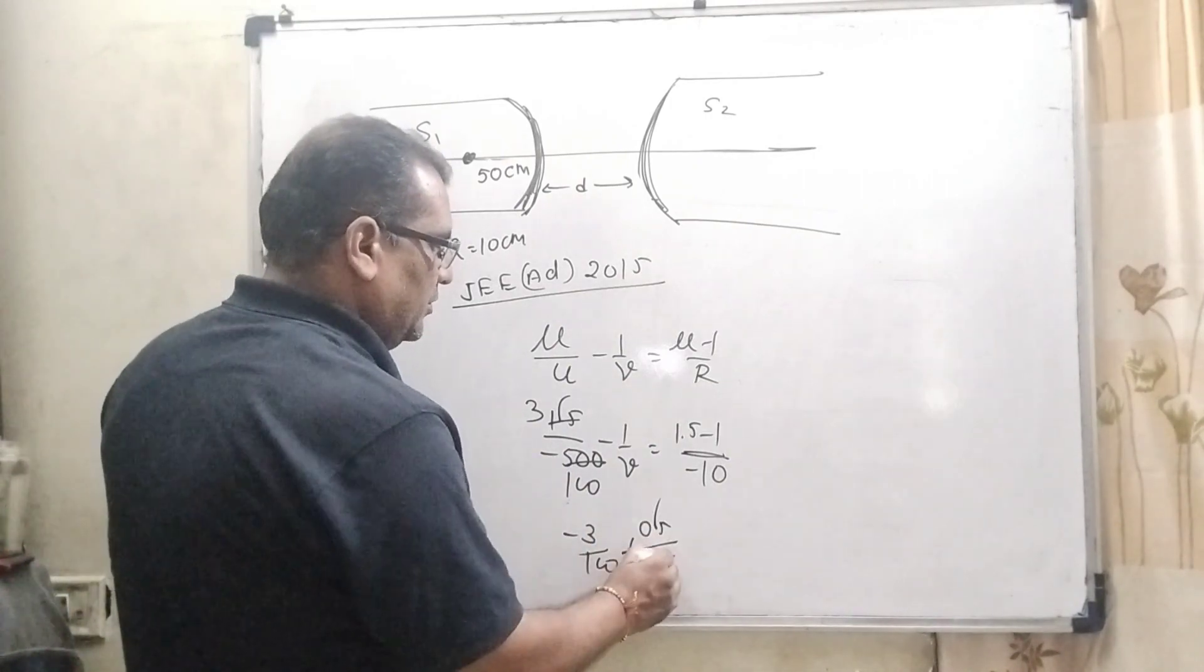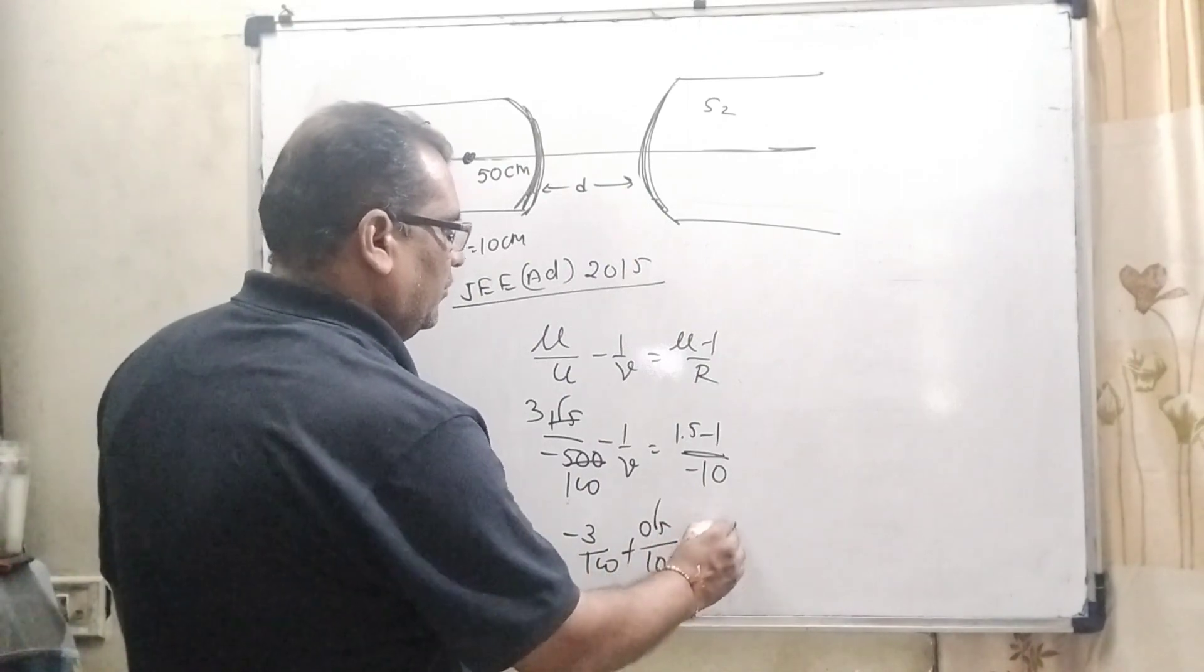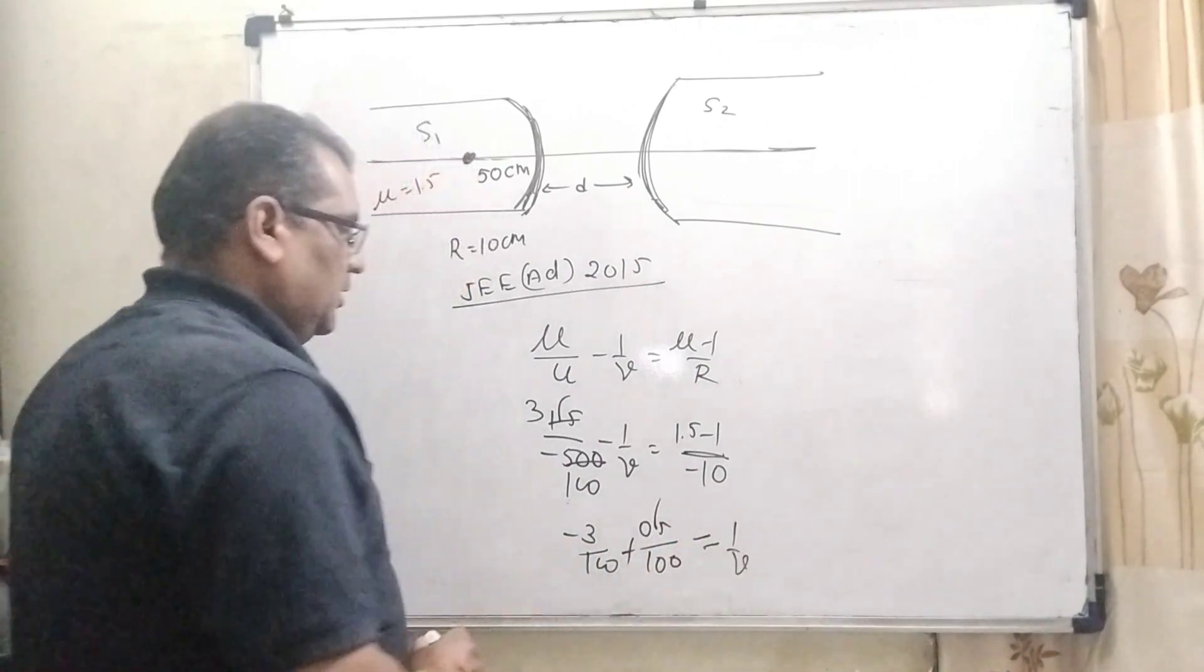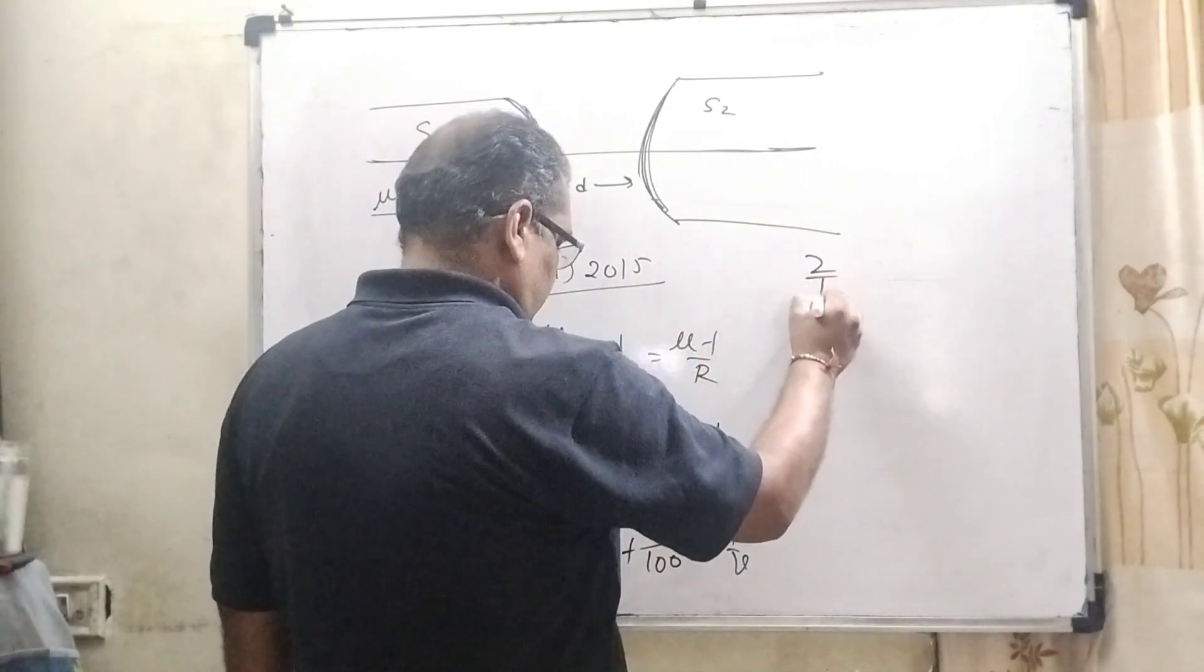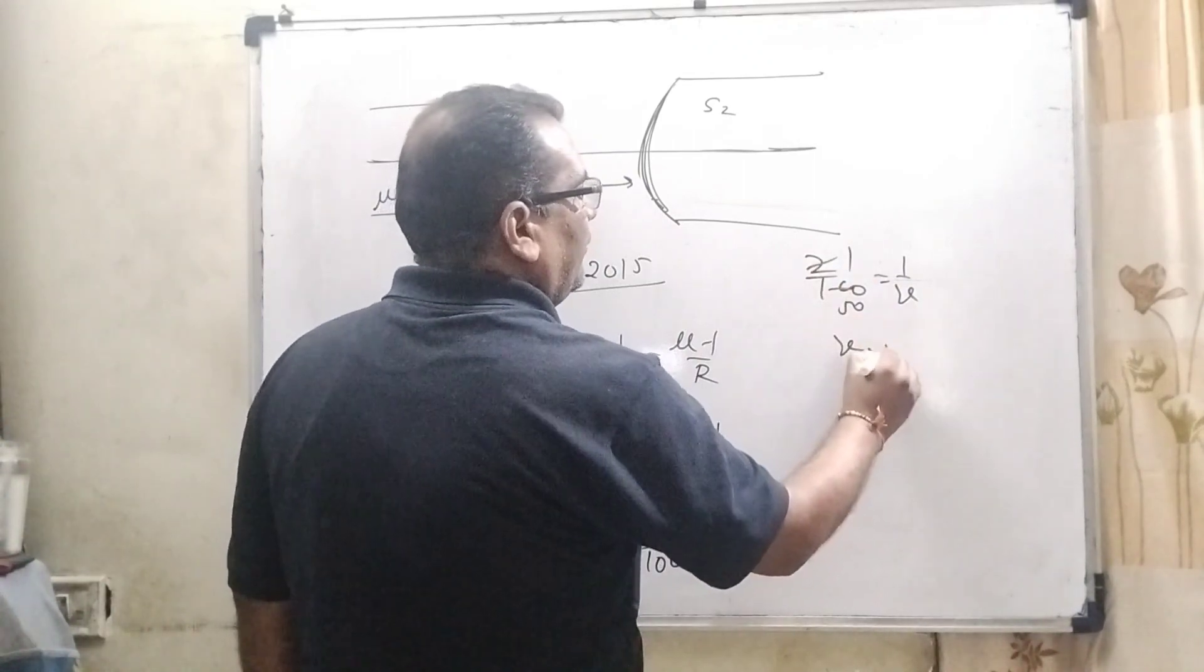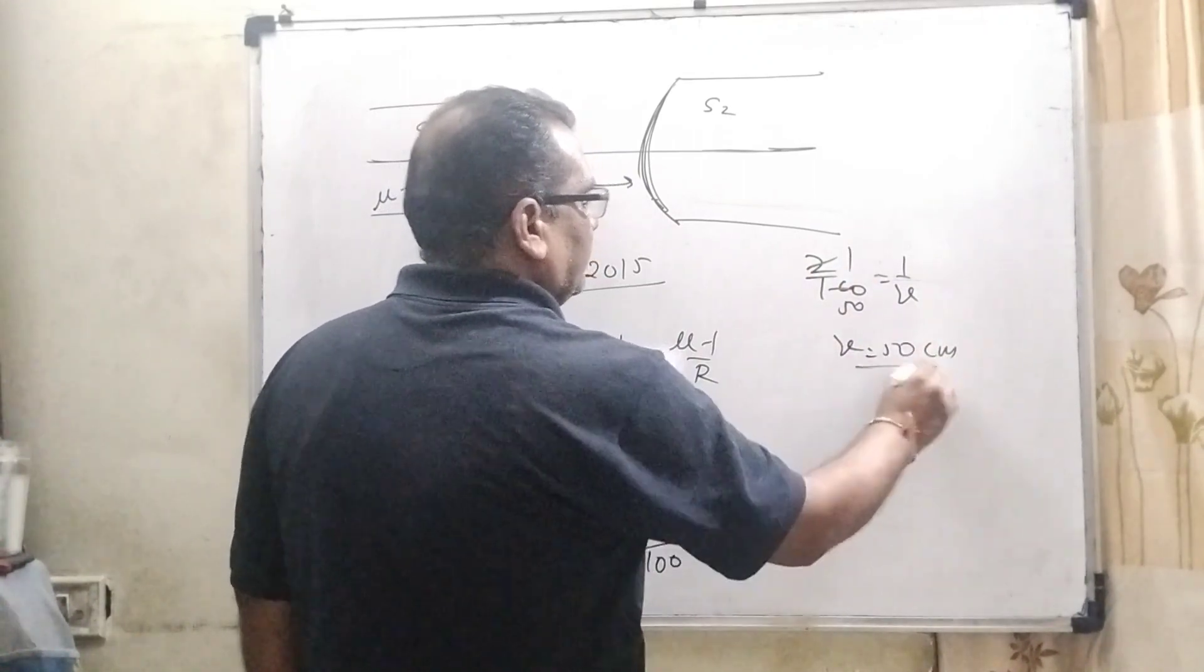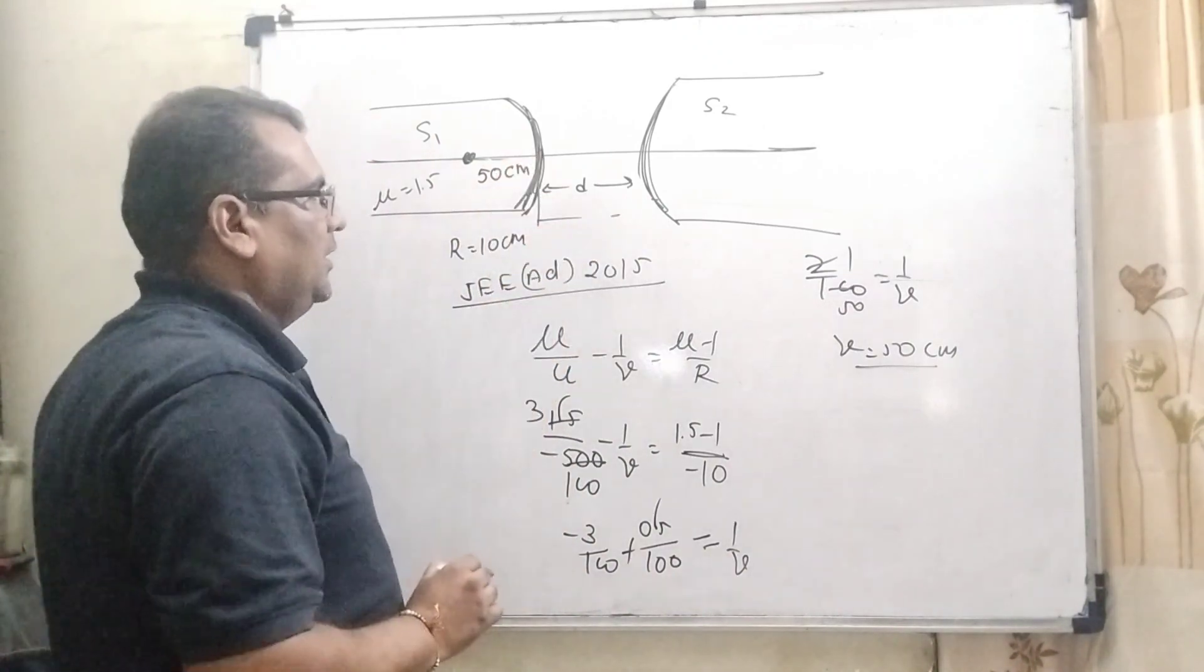So, point is removed and it will become again 100. So, equal to 1/V. So, here 5 minus 3, that means 2 by 100 equal to 1 by V. It means V equal to 50 centimeter from the surface.